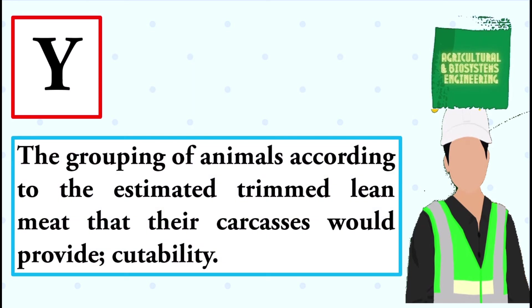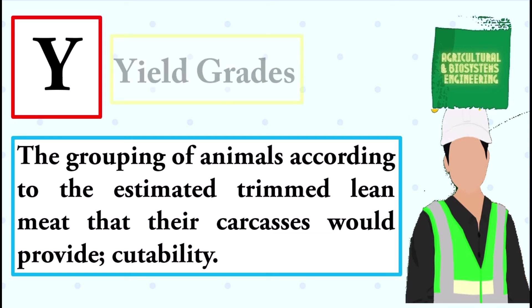The grouping of animals according to the estimated trimmed lean meat that their carcasses would provide, cutability. The answer is yield grades.